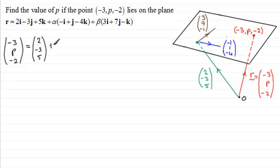and then plus α times the vector (-1, 1, -4). And then plus β times the vector (3, 7, -1). Okay, so we've got that down there.